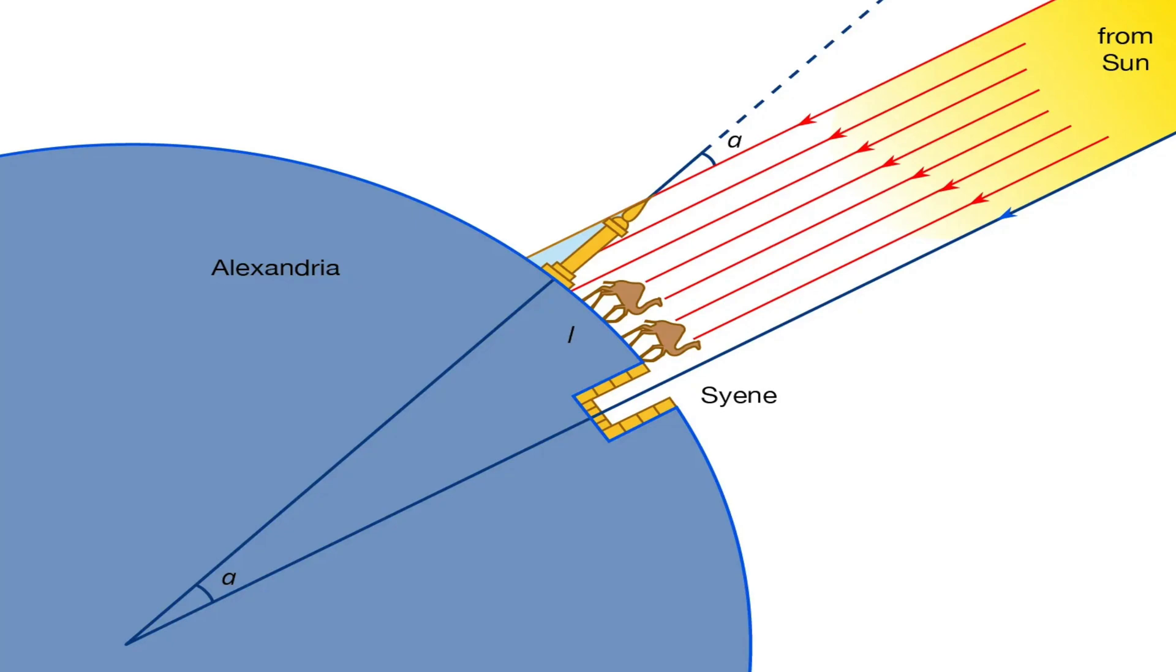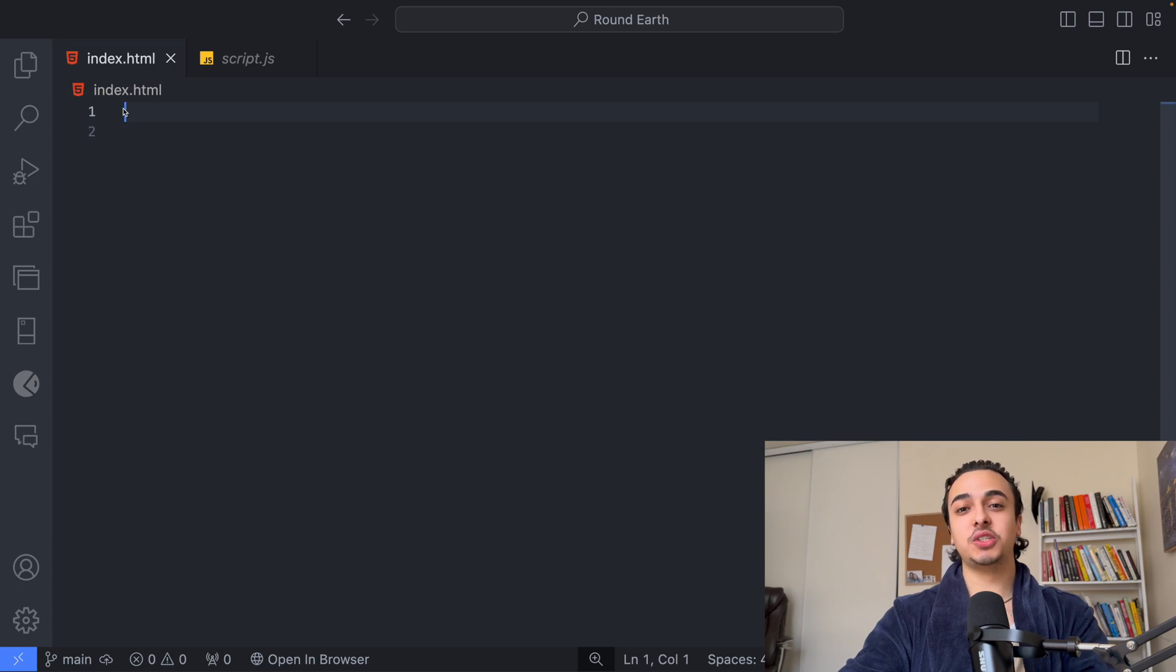And how the study went is that he compared the angle of the sun ray at the same time in two different locations. And he was able to calculate the spherical size of the Earth as a result of the different angles from the rays and the shadows from the structures.